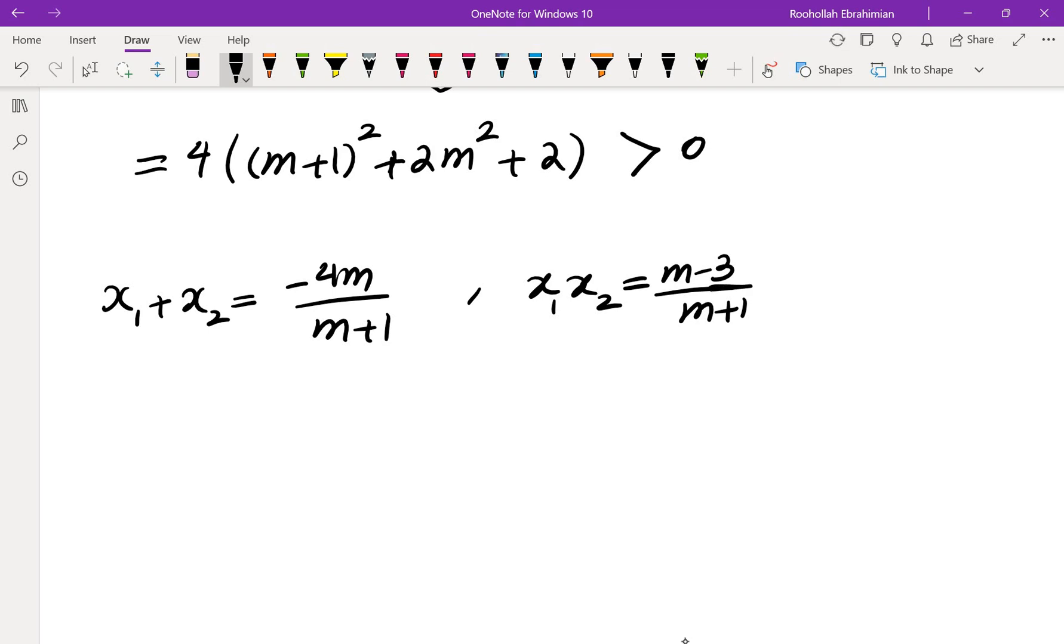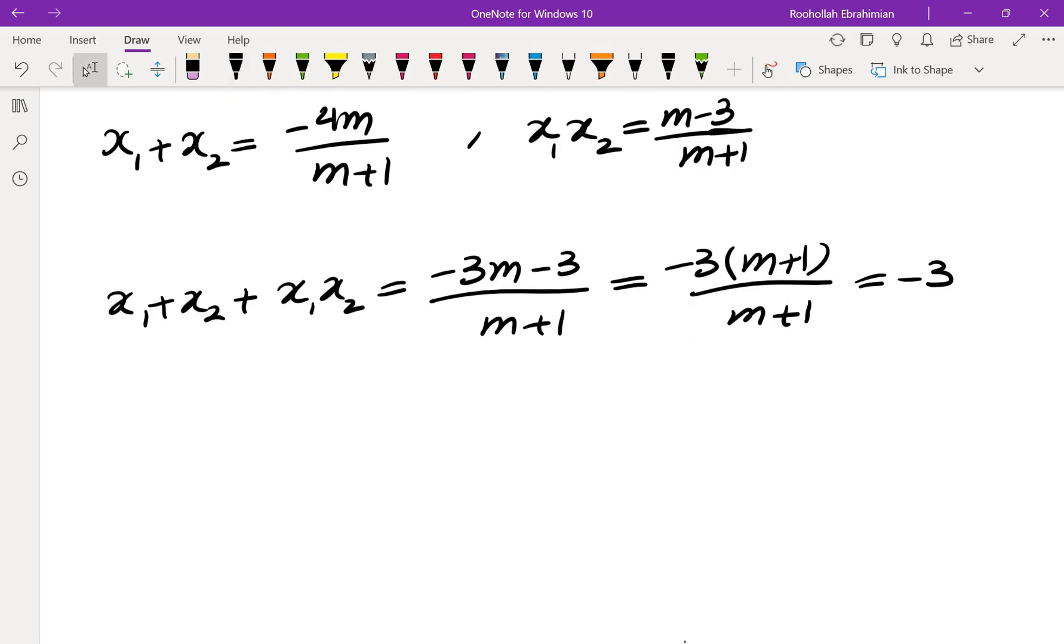Now I would like to eliminate m from the two equations. One way of eliminating m from the two equations is to add them. So you would get x₁ + x₂ + x₁x₂ = -3(m-3)/(m+1). And of course if we factor negative 3 from the top we are going to get negative 3 here. So that gives us a relation between the two roots.